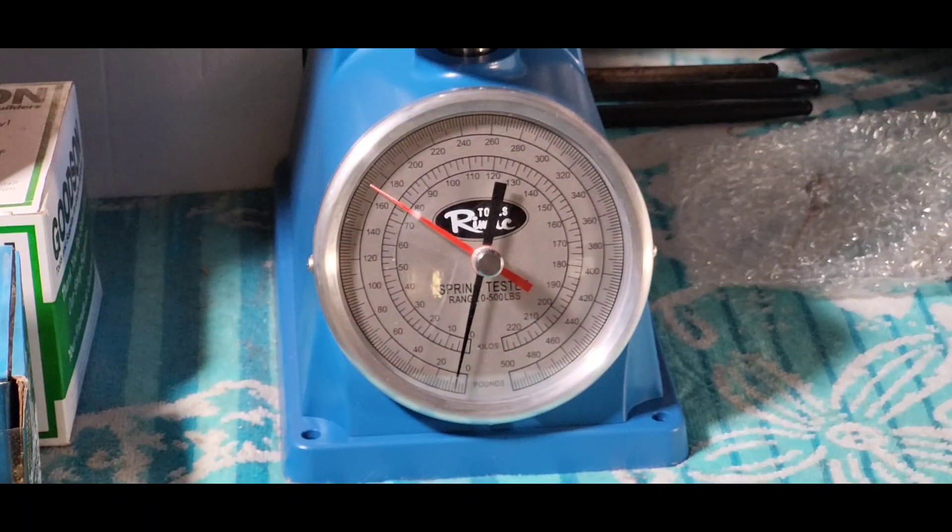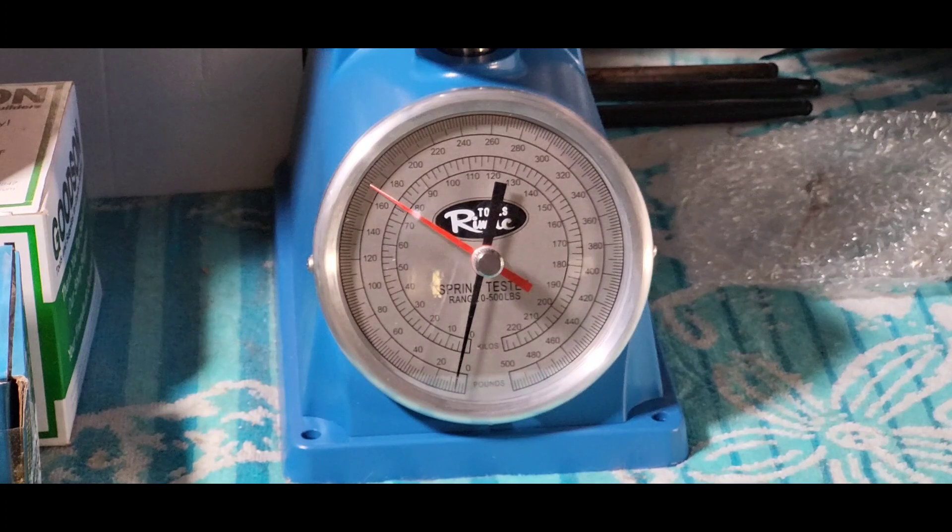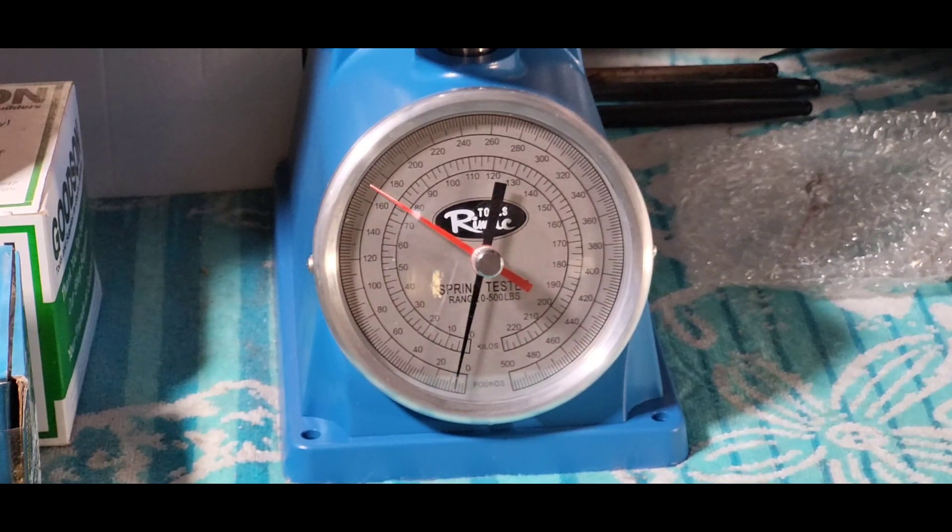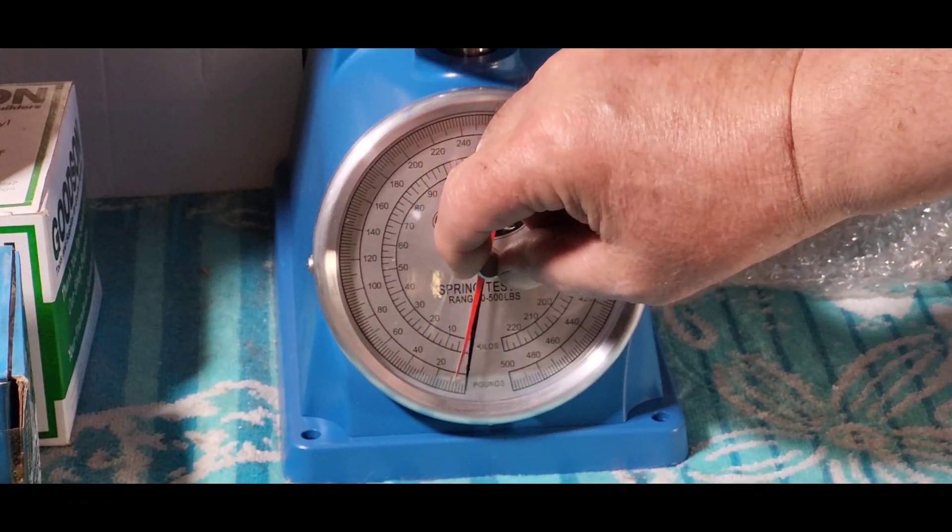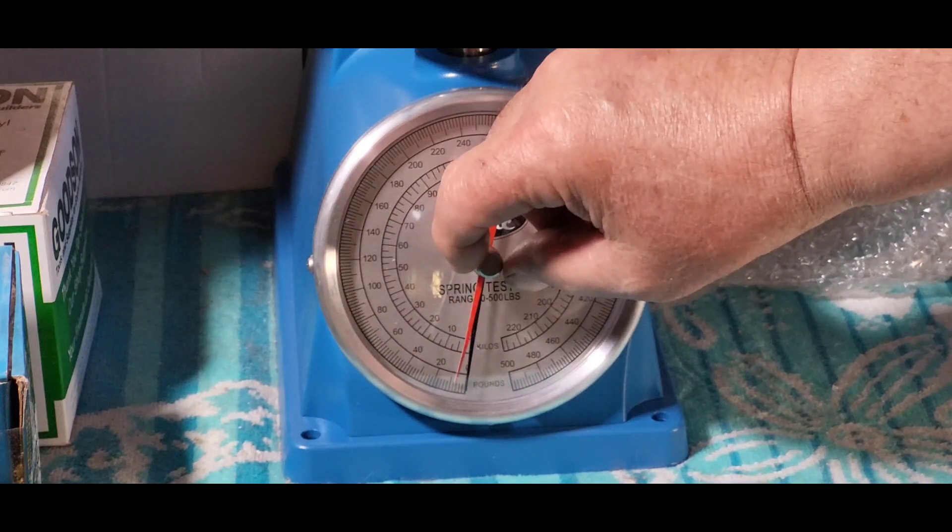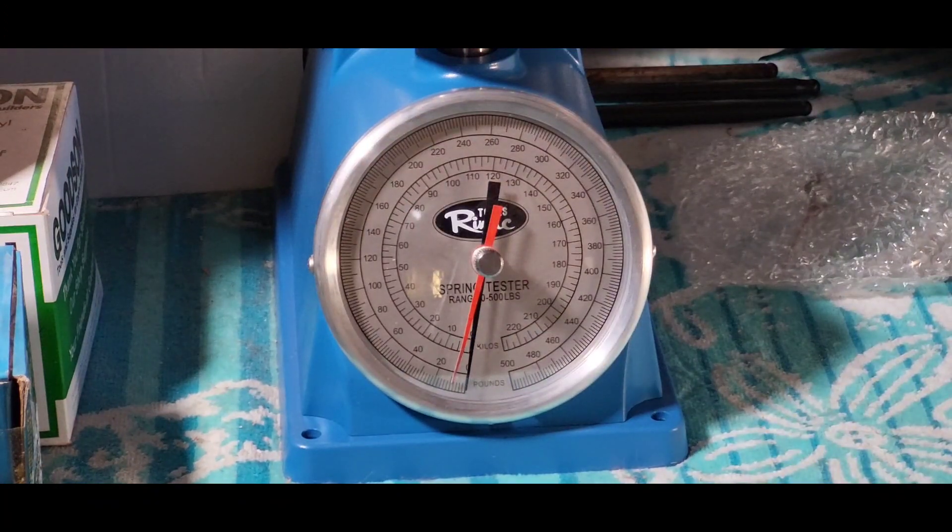As you see here, there's a black pointer and a red pointer. The red pointer's job is to follow the black pointer up the scale and stop at the highest point measured. And you're supposed to get it two or three or four pounds ahead of the black pointer before you start. The closest I can get it is ten pounds. Something's wrong with it.